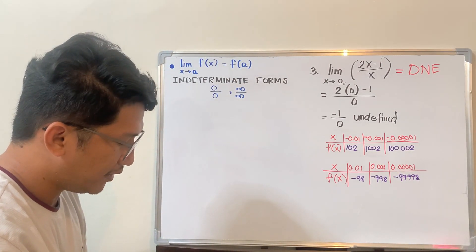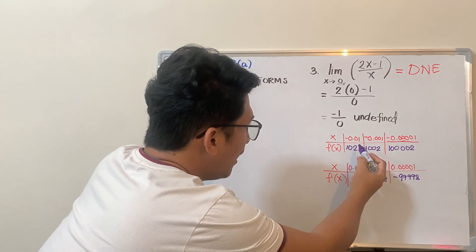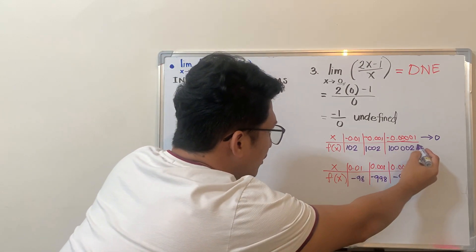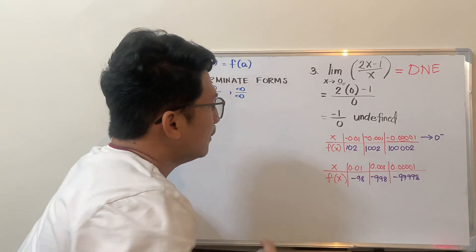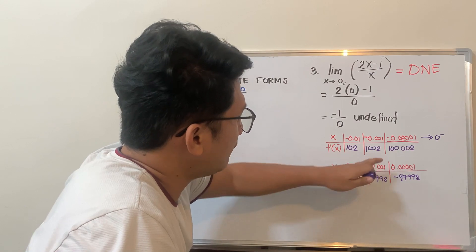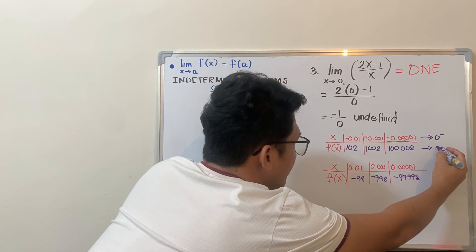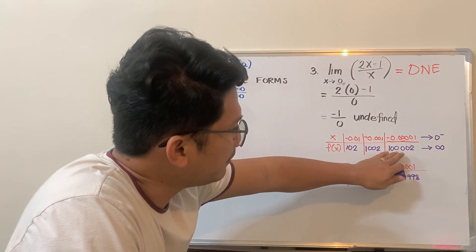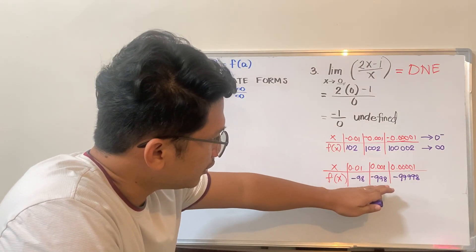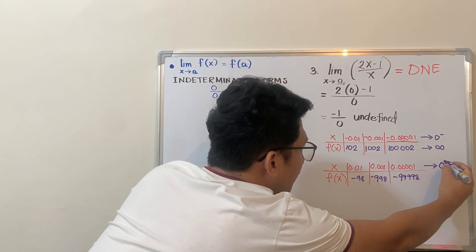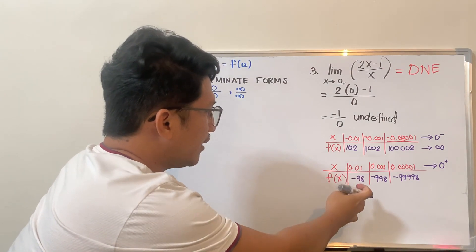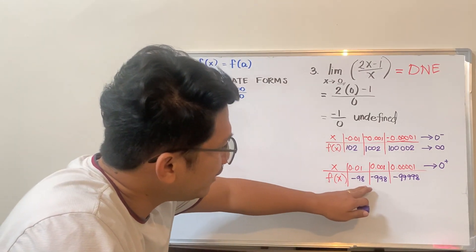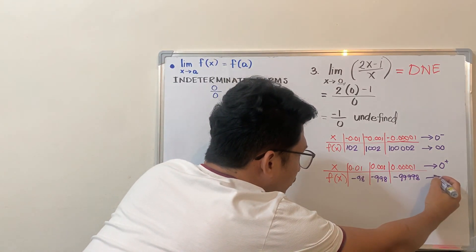Looking at the values, we can see the pattern. As we get closer and closer to 0 from the left, the values of f(x) are approaching positive infinity — they keep getting bigger. On the bottom, approaching 0 from the right, the number is getting smaller and smaller — since the bigger the numerical value when negative, the value is getting smaller. So it's actually heading or approaching negative infinity.